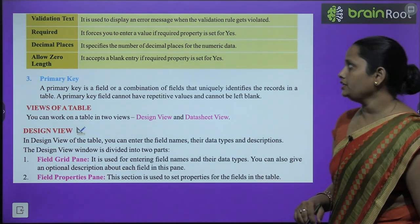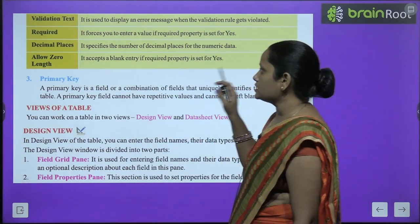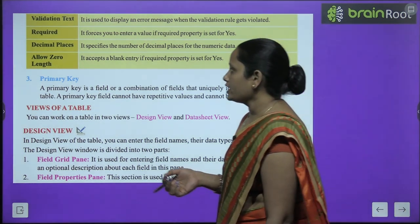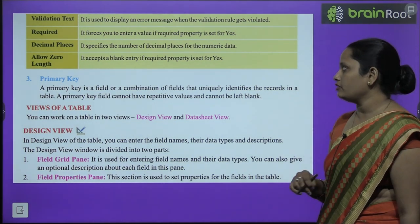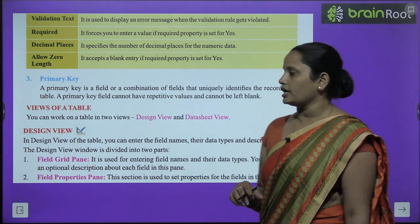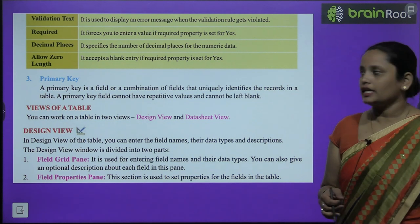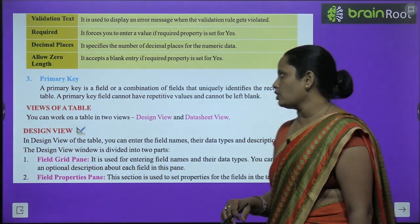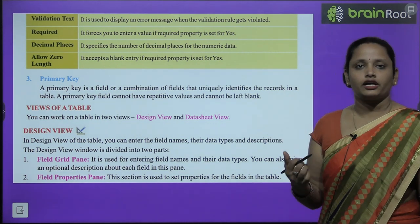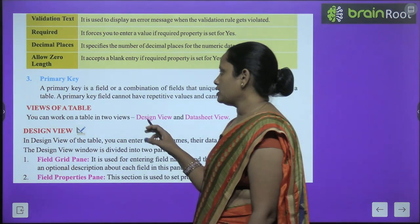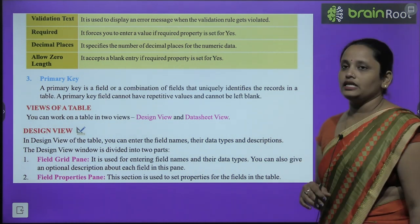Required helps you set the required property to Yes or No. Decimal Places specifies decimal places for any numeric data. Allow Zero Length helps you accept blank entries for required properties — if set to Yes, blank entries are allowed. Primary Key is a field or combination of fields that uniquely identifies records in a table. The primary key field cannot have repetitive values, nor can it be left blank.